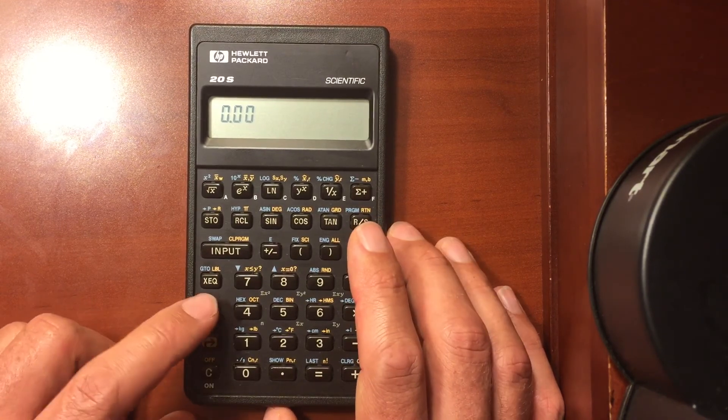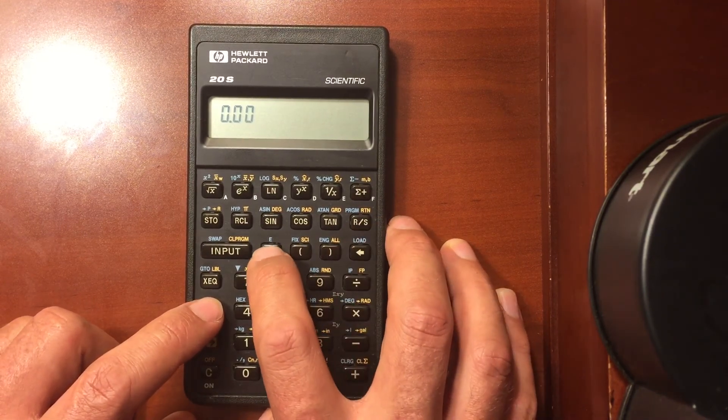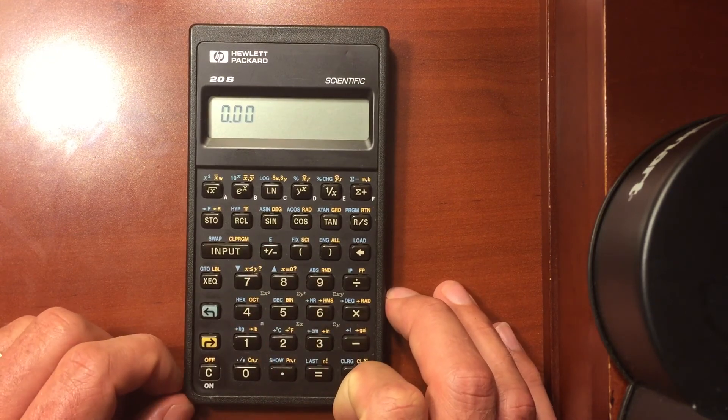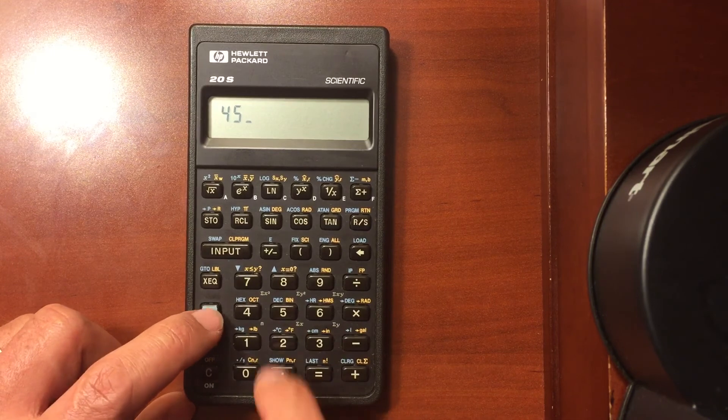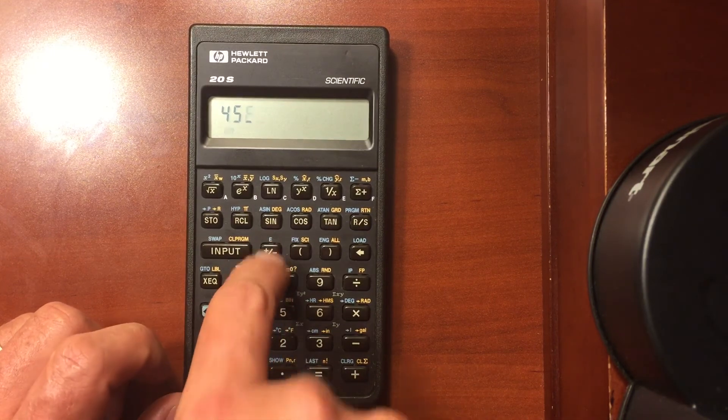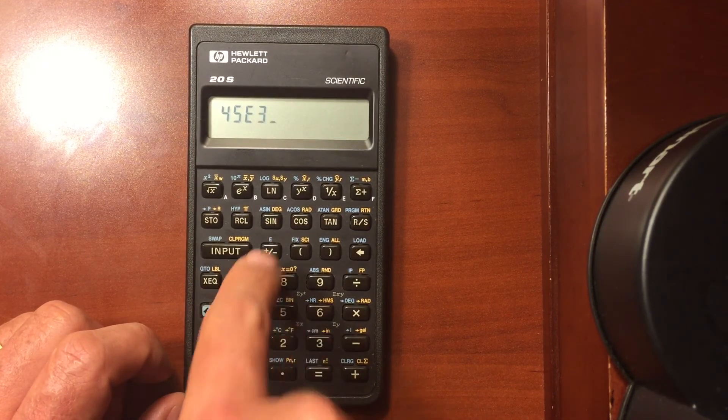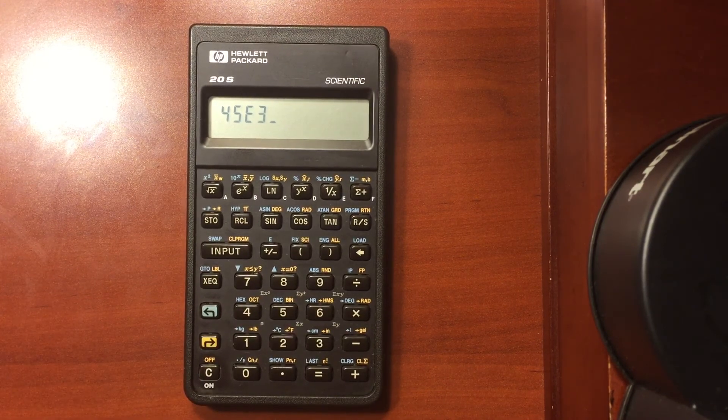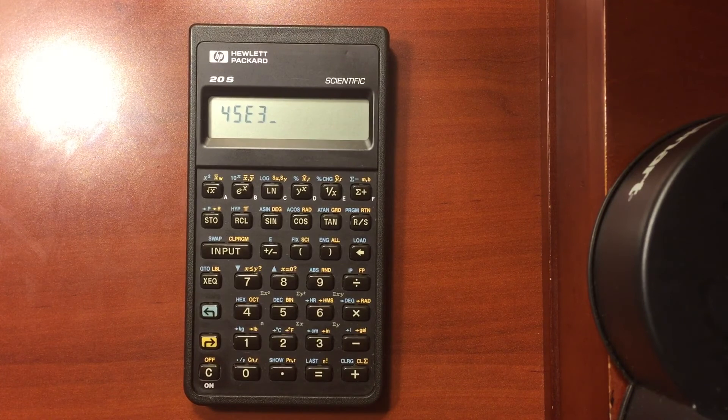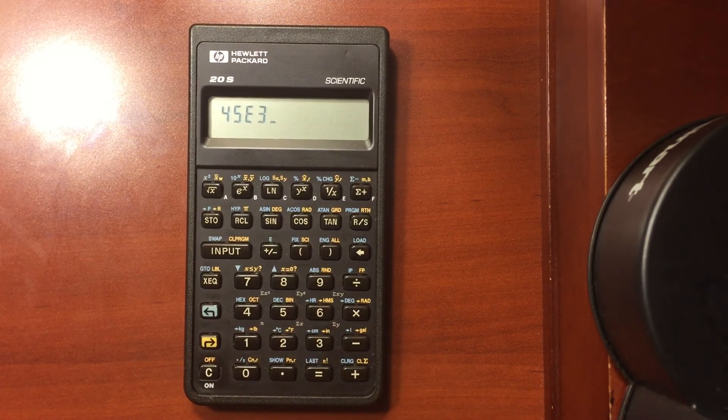And then some of the functions like here, your exponent. Which, if this was a scientific calculator, I'm going to be doing, you know, 45 times 10 to the third all the time. Something like that. And now I have to do a shift to get to the exponent. And that just doesn't seem very smart to me. I would have made that its own key. Maybe one of these parentheses keys.